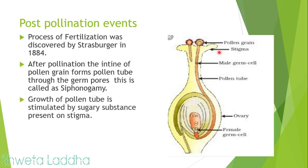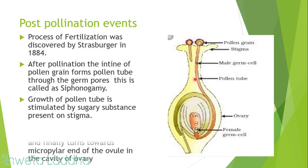Growth of the pollen tube is stimulated by the sugary substance present in the stigma. The movement of the pollen tube is due to chemotropic movement, that is chemical movement.